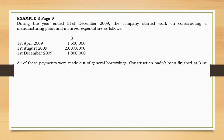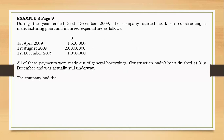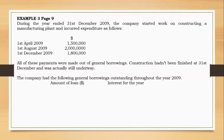Construction hadn't been finished after 1st December — it was still underway at the year end. The question specifically states that these borrowings were general, so we are dealing with general borrowing and not specific borrowings. As for general borrowings, we usually need to determine the capitalization rate first.